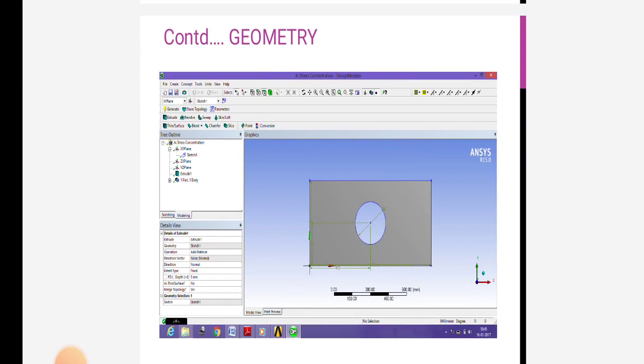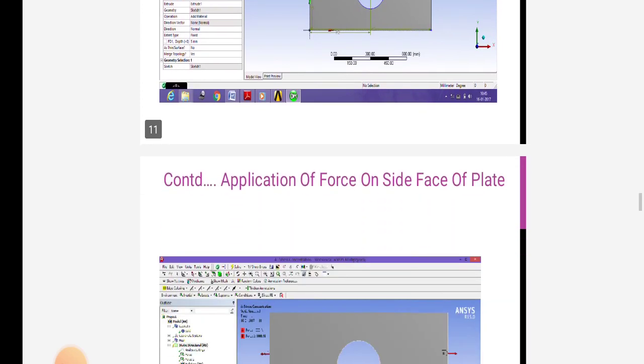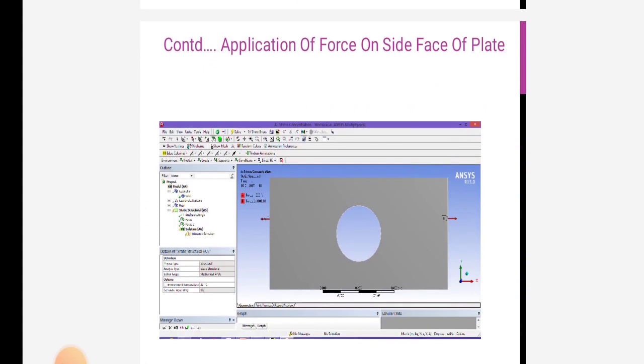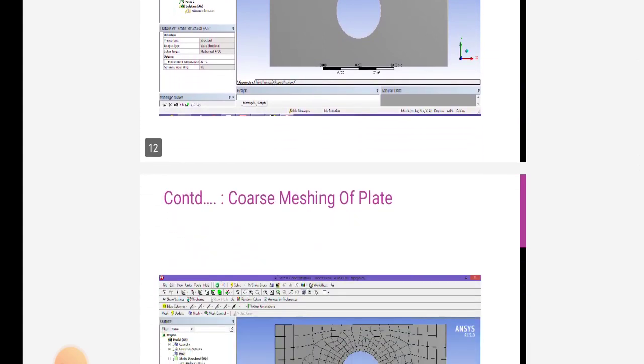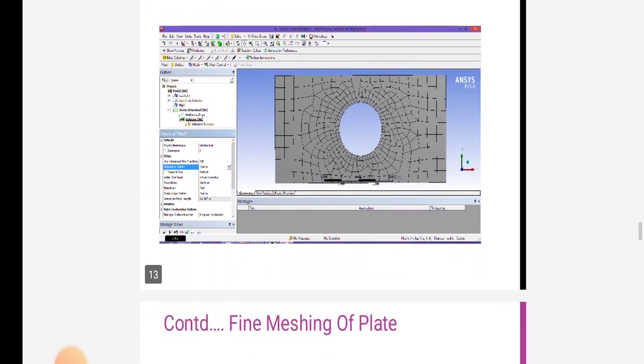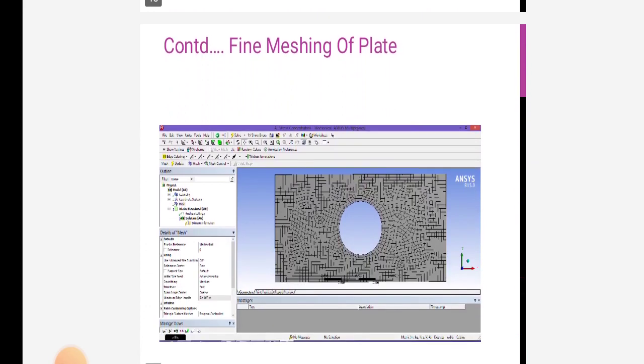In ANSYS software, there are different steps. Using these steps, we calculate all factors. First, we finalize geometry. Next step is application of force on side of plate. After this, there is coarse meshing of plate, then fine meshing of plate.